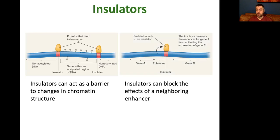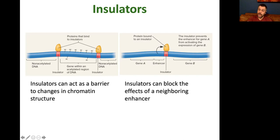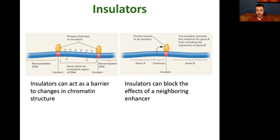Here is an example of two genes — gene A and gene B — with an enhancer in between them. An insulator, shown as a pink piece of DNA, recruits a protein to its specific sequence and blocks the effect of this enhancer on gene B, while allowing it to act on gene A, because there's no insulator between the enhancer and gene A. This shows how you can selectively insulate one gene from regulatory elements controlling a second nearby gene.